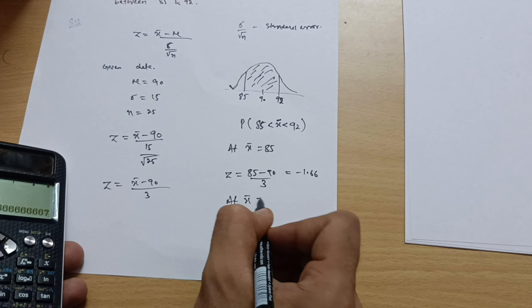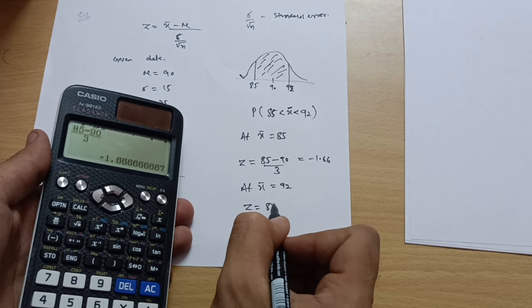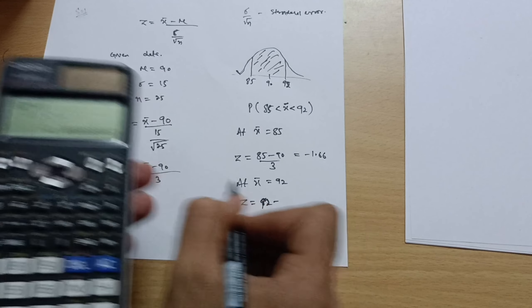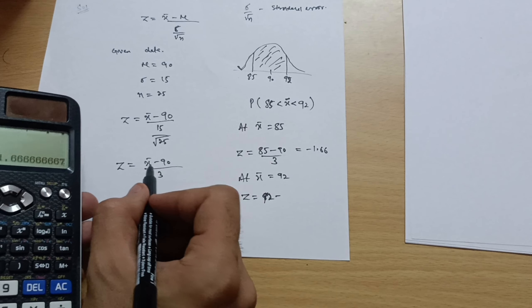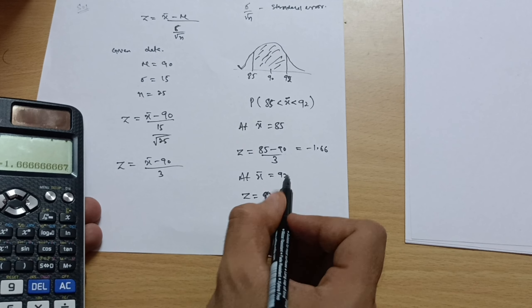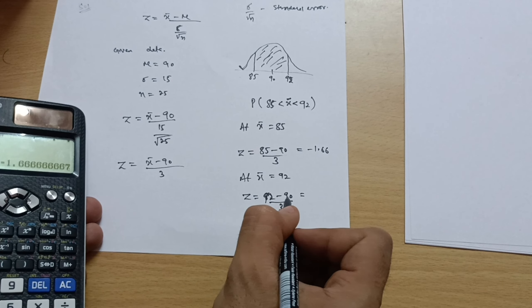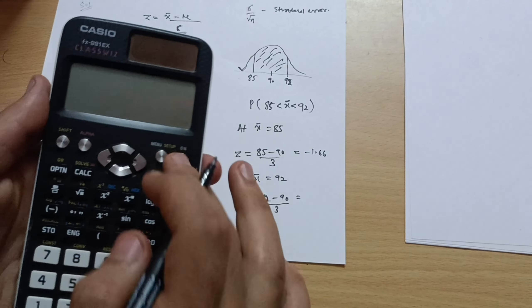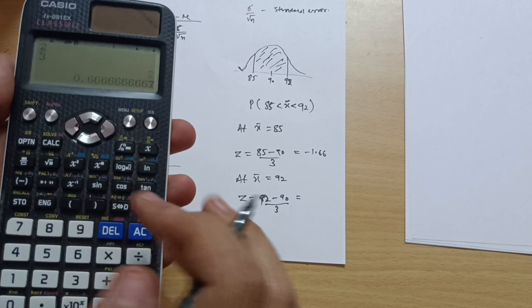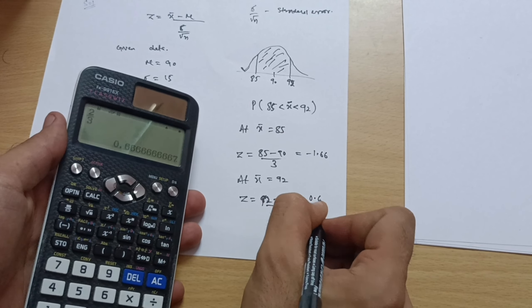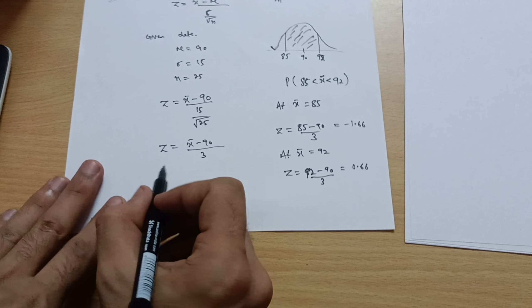Then at x̄ = 92: z = (92 − 90) / 3 = 2/3 = 0.66.